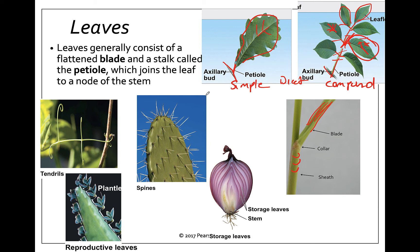Just like other organs, leaves can have specialized functions. Leaves can form tendrils — common on vines — which reach out with curly tendrils to grasp onto things and provide support for the plant. One exception: grapevine tendrils are actually modified stems, not leaves. Another example is the cactus — the spines on a cactus are actually the leaves. The large fleshy portion of a cactus is the stem, and that's what does photosynthesis.